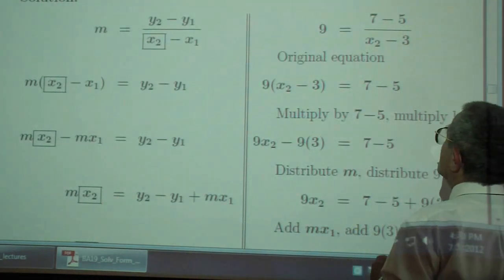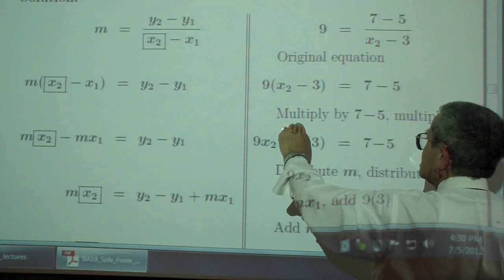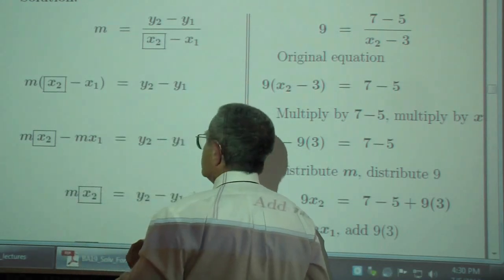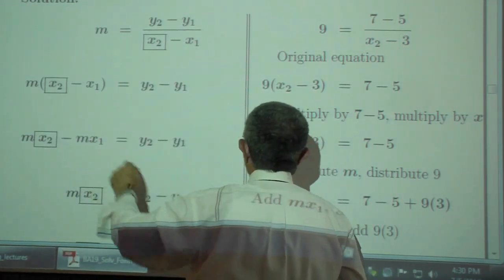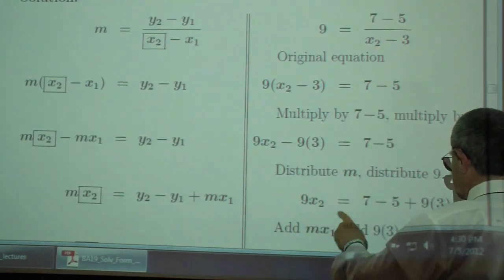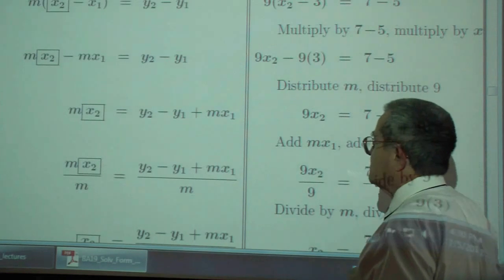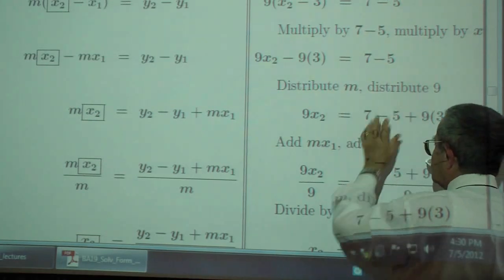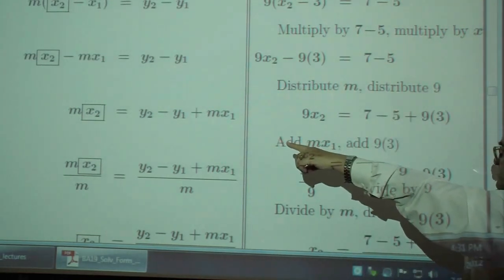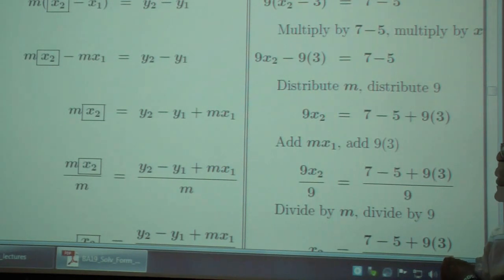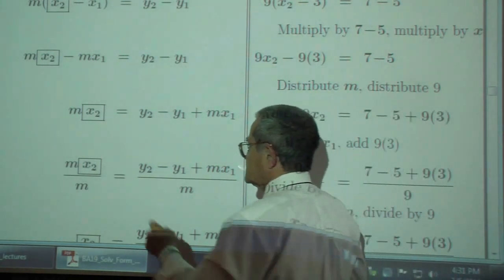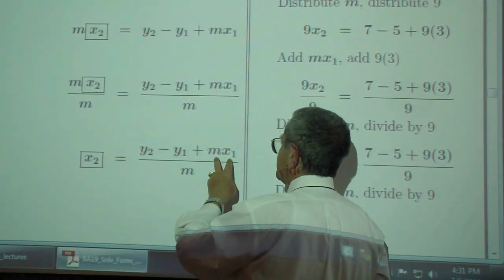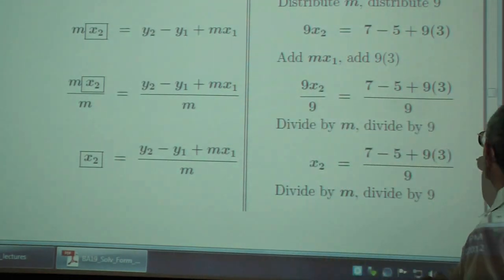And then, distribute. The x is free. Distribute. M x sub 2 minus M x sub 1. You want to get rid of this constant, you add it to both sides. And you just have constants on one side. You could collect all this as one number. I leave it that way so that you can see the parallel. And the last step, divide both sides by M. So, x sub 2 is y sub 2 minus y sub 1 plus M x sub 1 divided by M.